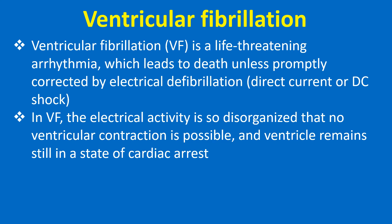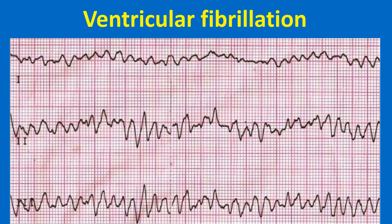Ventricular fibrillation is a life-threatening arrhythmia which leads to death unless promptly corrected by electrical defibrillation — direct current or DC shock. In VF, the electrical activity is so disorganized that no ventricular contraction is possible and the ventricle remains in a standstill state of cardiac arrest. Ventricular fibrillation is recognized on the ECG as highly disorganized electrical activity where each wave has a different morphology. When multiple simultaneous leads are available, the morphology differs between leads as well. Here it is a coarse ventricular fibrillation.